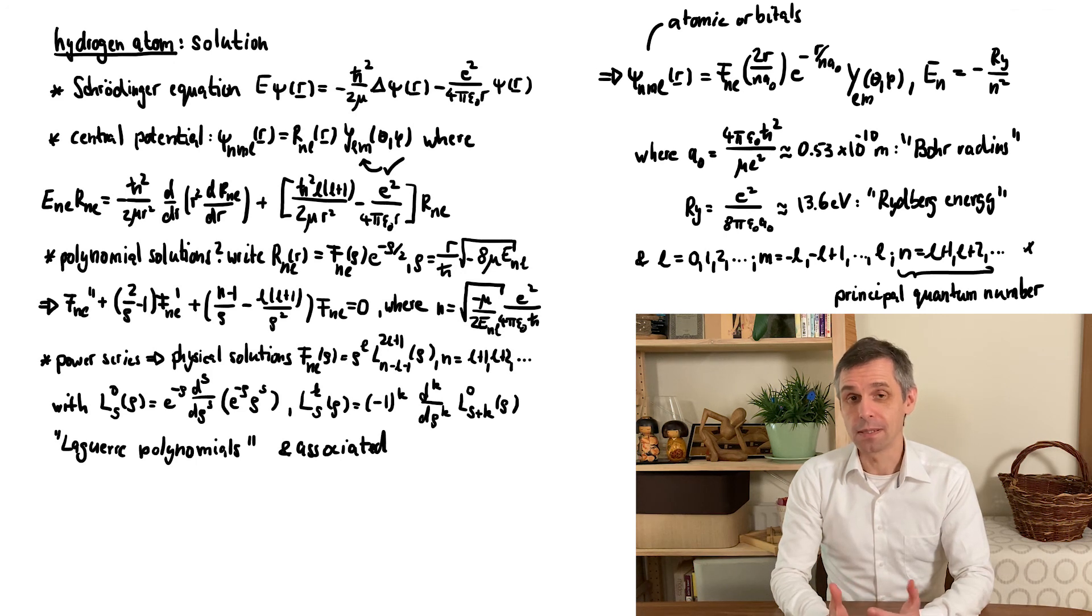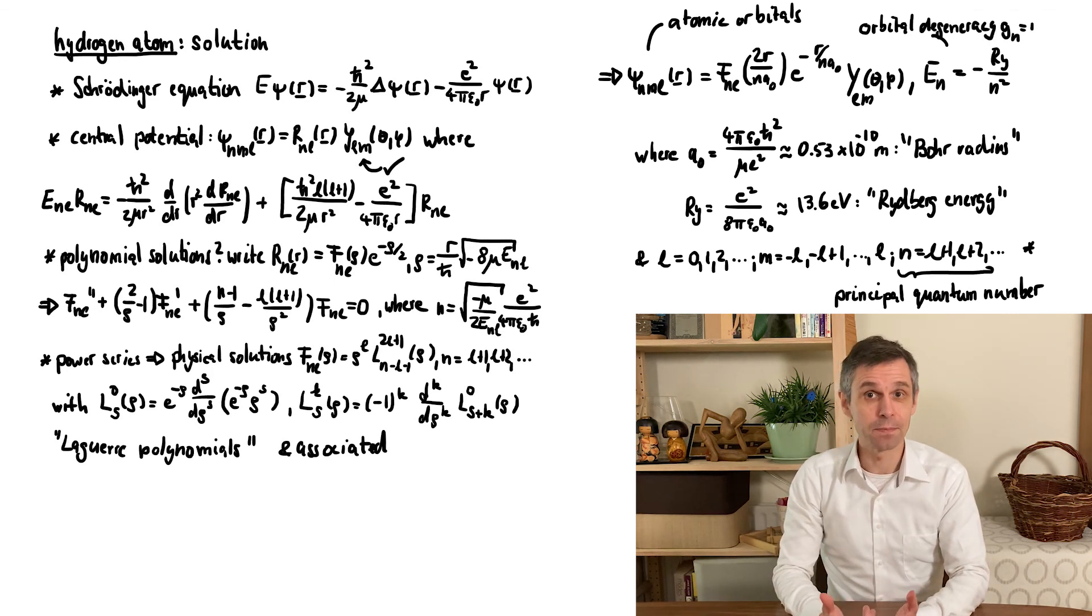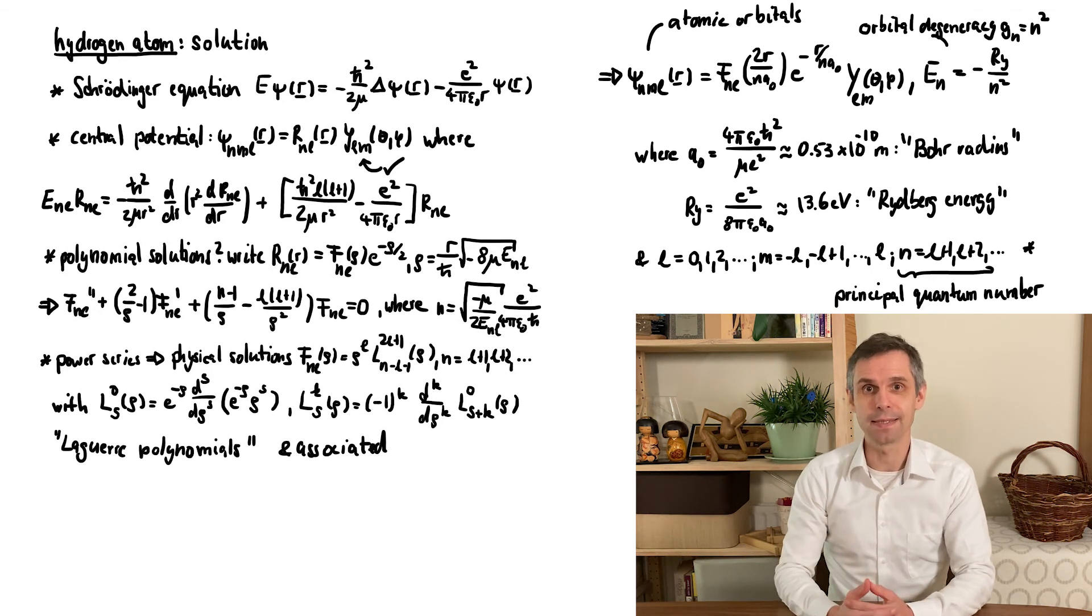Given the constraints on the quantum numbers, we can also infer that these energy levels have an orbital degeneracy of n squared. As in previous problems, this ignores a possible spin degeneracy.